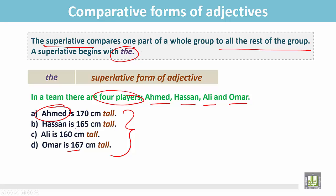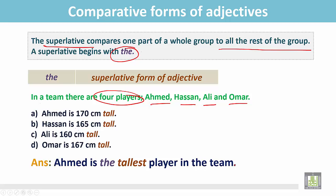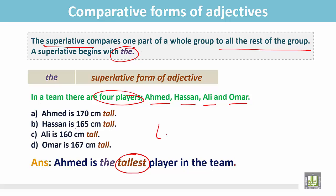We write this sentence this way: 'Ahmed is the tallest player in the team.' The superlative form of the adjective 'tall' is 'the tallest,' and it is followed by 'the.'